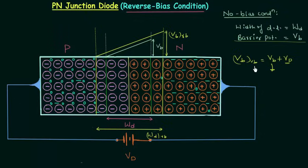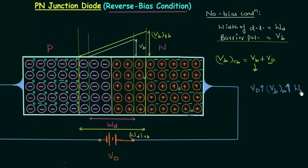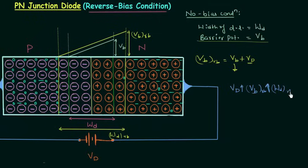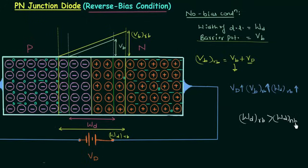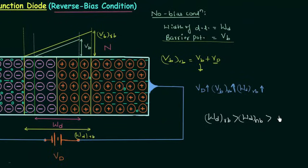So if you increase the reverse bias potential V_D, the barrier potential will also increase. Similarly, on increasing V_D, the width of the depletion layer will also increase. Comparing all three conditions — reverse bias, no bias, and forward bias — the width of the depletion layer is maximum in reverse bias condition, then no bias condition, and minimum in forward bias condition.